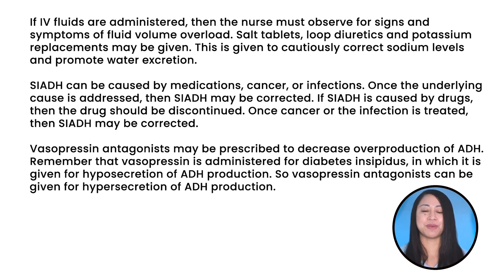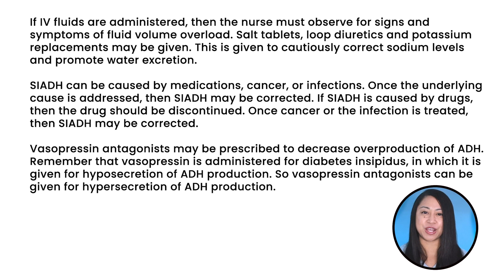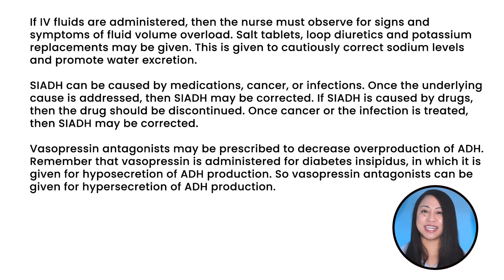SIADH can be caused by medication, cancer, or infection. Once the underlying cause is addressed, SIADH may be corrected. If SIADH is caused by drugs, then the drug should be discontinued. Once cancer or infection is treated, SIADH may be corrected. Vasopressin antagonists may be prescribed to decrease overproduction of ADH in SIADH. Remember that vasopressin itself is administered for diabetes insipidus, where there is hyposecretion of ADH, while vasopressin antagonists are given for hypersecretion of ADH production in SIADH.